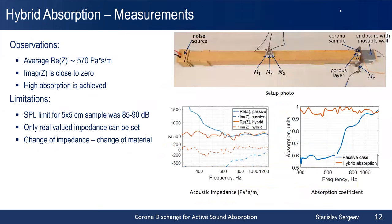Here is the photo of the experimental setup and the results we achieved. The graph shows measurement of impedance in the passive and active cases. When the actuator is on, the imaginary part of the impedance fluctuates around zero, compared to some high magnitude values in the passive case. This means the impedance imposed is indeed purely resistive, and the resistance is also constant, fluctuating around 570 Pa·s/m, which is quite close to the characteristic impedance of air. All this leads to broadband and very high absorption compared to the passive case.